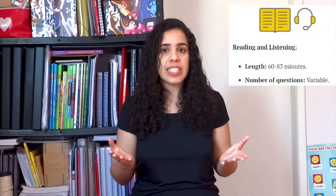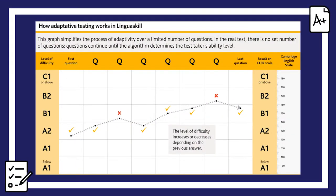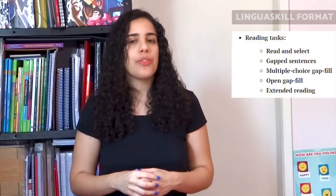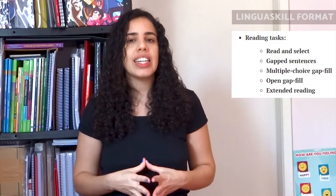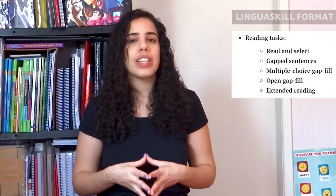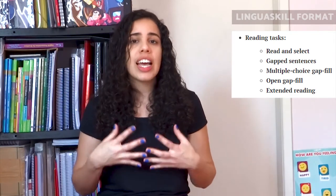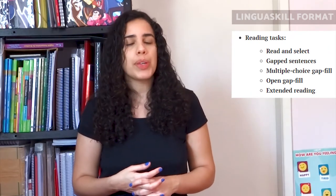Let's start with reading and listening — they take from 60 to 85 minutes. There is not a fixed number of questions because the reading and listening modules are adaptive. Each question the candidate answers helps the computer understand their level better. If a candidate gets a question right, the computer will choose a harder question. The test finishes when the candidate has answered enough questions for LinguaSkill to identify their level accurately, or a maximum number of questions have been asked. There are five types of reading tests. First, read and select, where candidates read a notice, label, memo, or letter containing a short text and choose the sentence or phrase that most closely matches the meaning of the text. There are three possible answers.